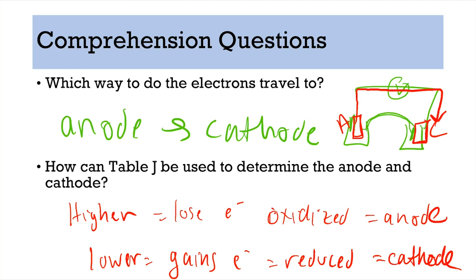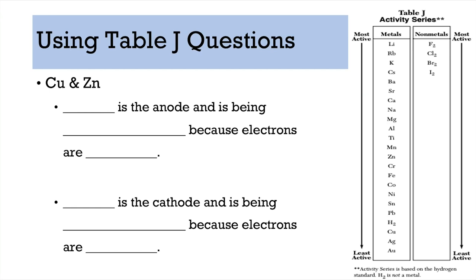Now let's go through ten pairs to really drive this point home using Table J. First: copper and zinc. Zinc is higher on Table J, so zinc is the anode — it is being oxidized and electrons are lost. That means copper is lower, so it will be reduced and electrons are gained. Remember LEO says GER.